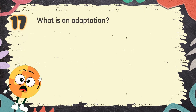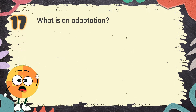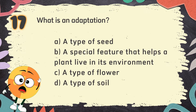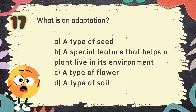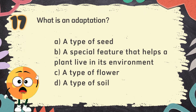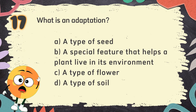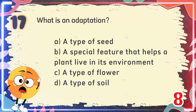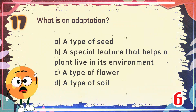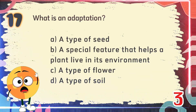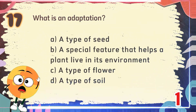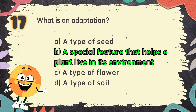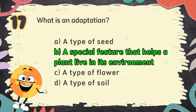Number 17: What is an adaptation? The choices are: A. A type of seed, B. A special feature that helps a plant live in its environment, C. A type of flower, D. A type of soil. The correct answer is B. A special feature that helps a plant live in its environment.